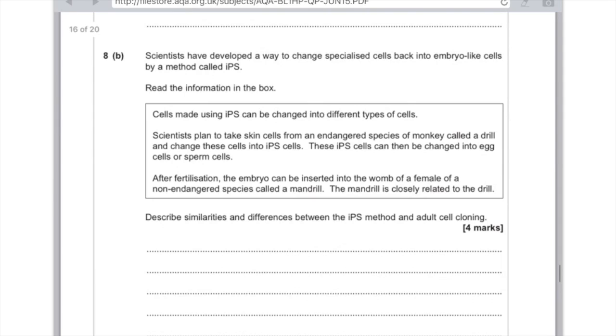Now we need to look at the differences. Make sure you split your answer up so that two marks are for similarities, two marks are for differences. The differences are that IPS uses sexual reproduction and the IPS surrogate mother doesn't have to be the same species, whereas we know in adult cell cloning that it needs to be the same.